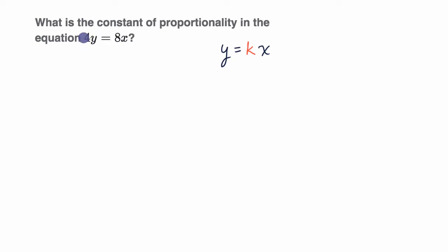So what we do is manipulate it a little bit so that we can see it in that form. The obvious thing is we just need to solve for y. Right now it says 4y is equal to 8x. If we want to solve for y, we can just divide both sides by four.